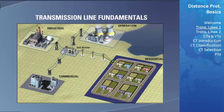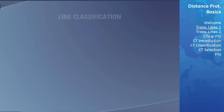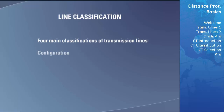In a power system, the area that constitutes a transmission line has well-defined boundaries. The physical location of a line boundary is often called a terminal. Terminals classify the end of a transmission line and can be a switch, a breaker, a bus, or a transformer. There are four main classifications of transmission lines that describe their configuration, the function they perform, and their location in the system.